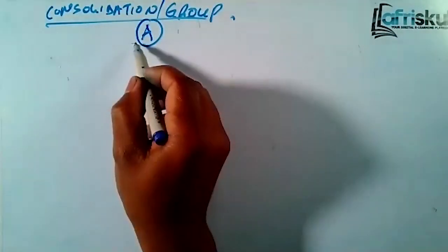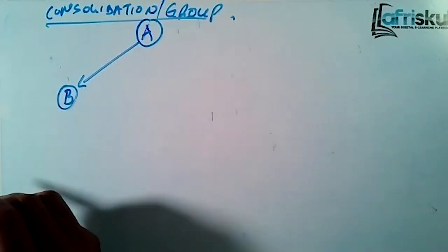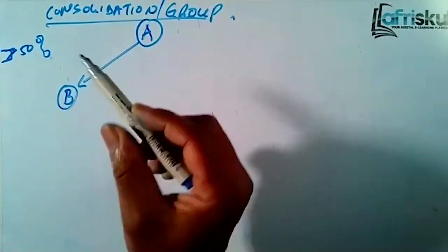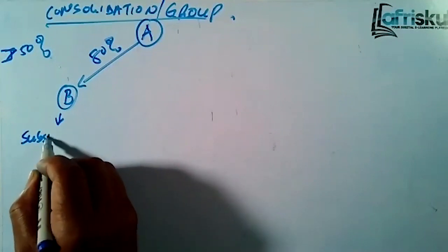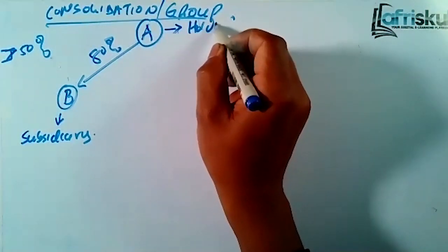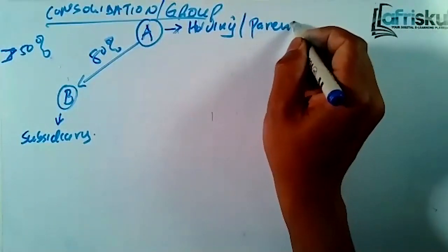We have Company A. Company A acquires another company, let's call it Company B, at more than 50 percent — for example, 80 percent. Now this Company B is what we call a subsidiary, and Company A is known as the holding or the parent company.